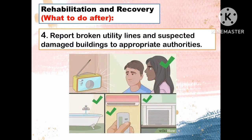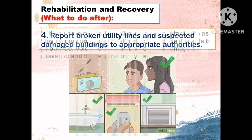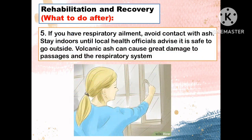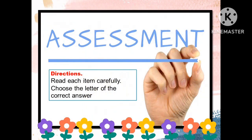After a volcanic eruption, report broken utility lines and suspected damaged buildings to appropriate authorities. If you have a respiratory ailment, avoid contact with ash. Stay indoors until local health officials advise it is safe to go outside. Volcanic ash can cause great damage to air passages and the respiratory system.